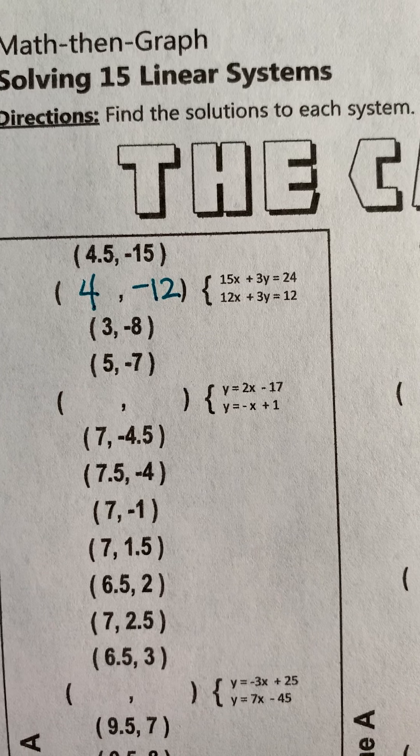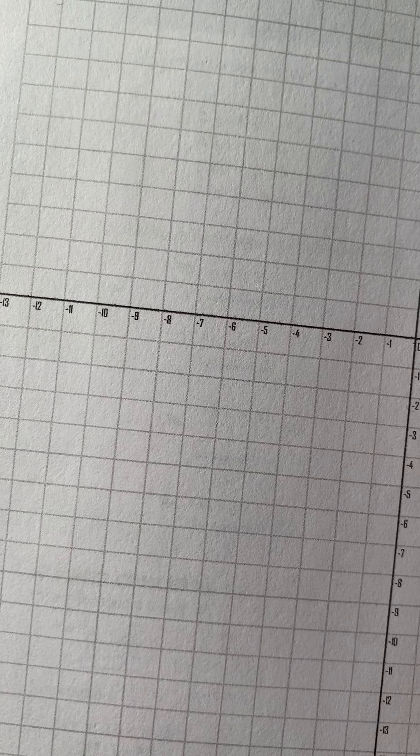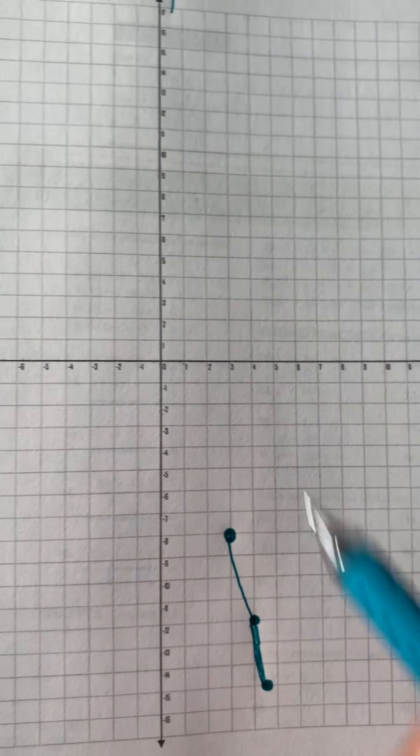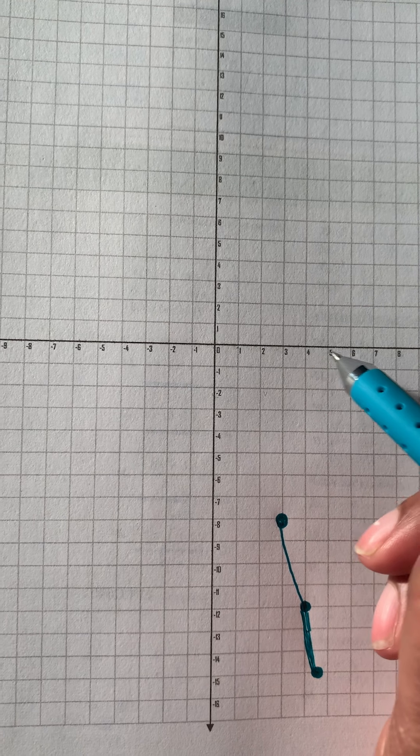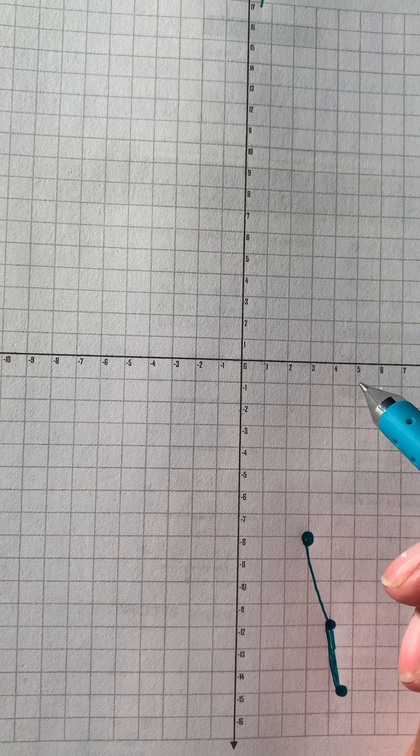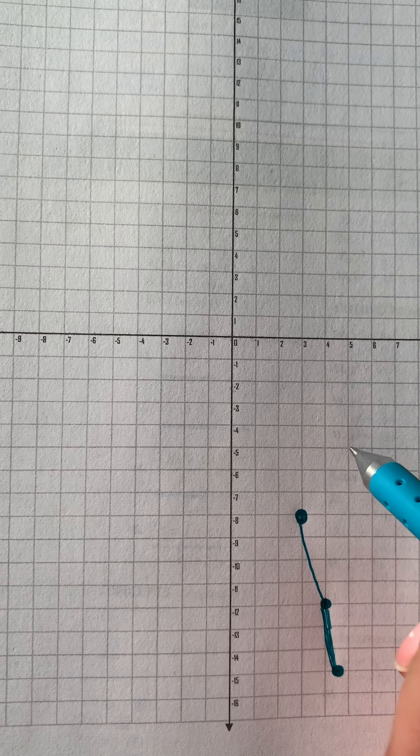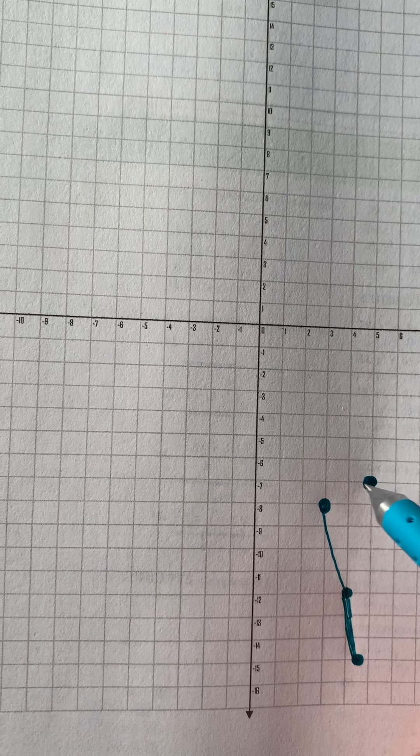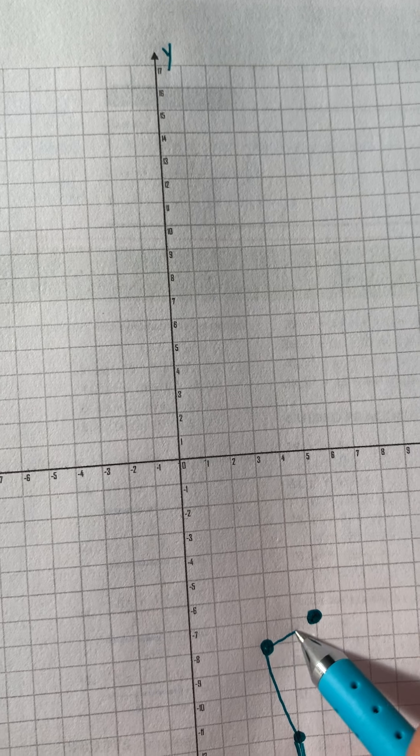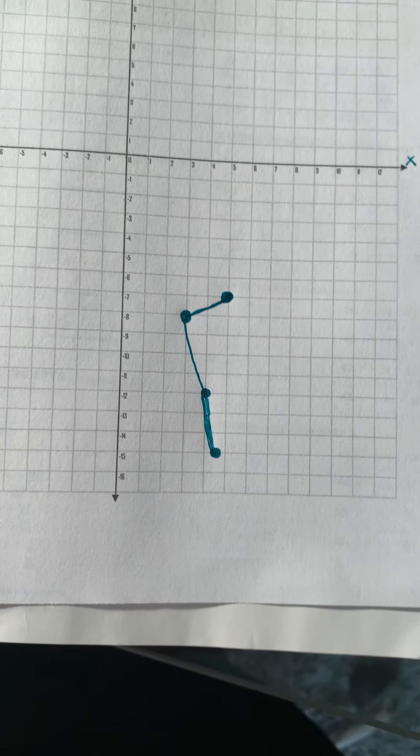What's next? 5, negative 7. So over 5. And how many? Up or down 7? Definitely down 7. So over 5, down 7. So here at the origin: 1, 2, 3, 4, 5. Down 1, 2, 3, 4, 5, 6, 7 is right here. And we are going to connect that. That was pretty good. So we are on a roll. You are on a roll.